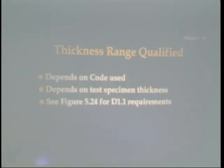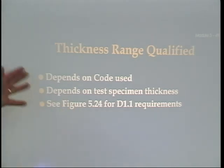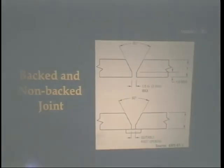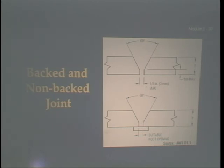Some codes qualify you for twice the thickness welded; others have specific minimums and maximums. Another essential variable is the joint configuration itself. Standard test plates and pipes approximate the necessary configurations. One important aspect is the presence or absence of weld backing. In D1.1 there are specific references to the direction of rolling of plate materials when using backing. The ductility of the metal will vary depending on its rolling direction — we'll cover this more in module six.